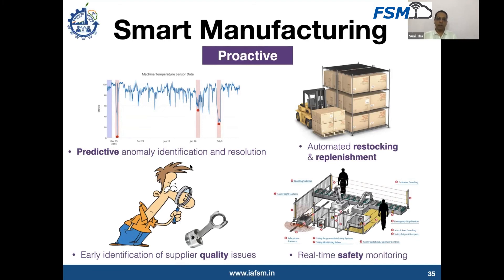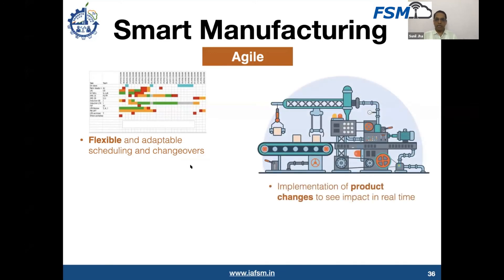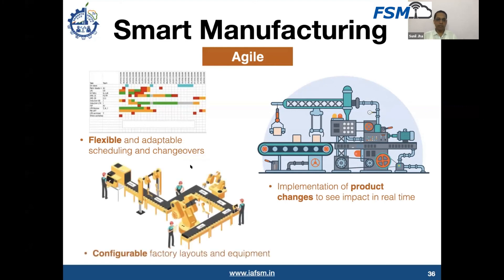These are some of the proactive approaches you can implement. Certainly, the agility we look forward to means you will be ready to implement flexible schedules and changeovers. You will be implementing production changes in real-time. Agility finally comes when you implement the last stage of smart manufacturing — you make the factory layout configurable so you can change the layout depending on the product and requirement, or your factory layout is designed in such a way that you can do a quick changeover among products easily.